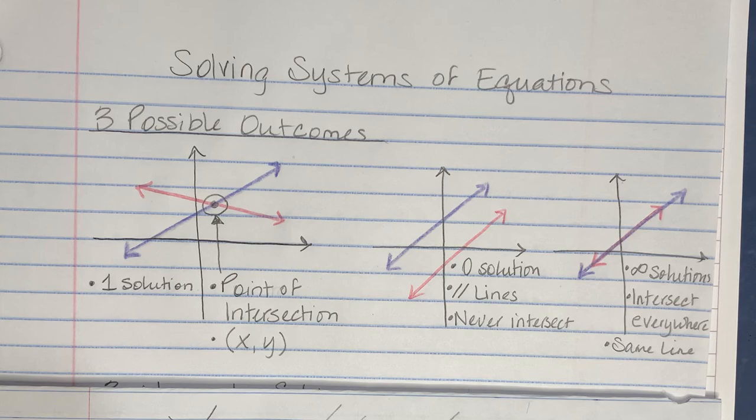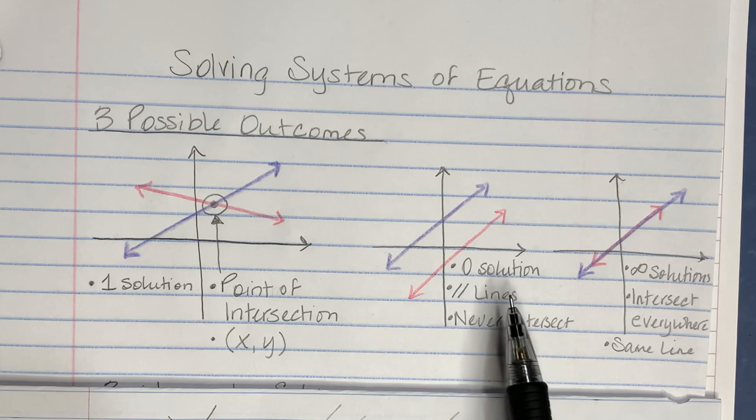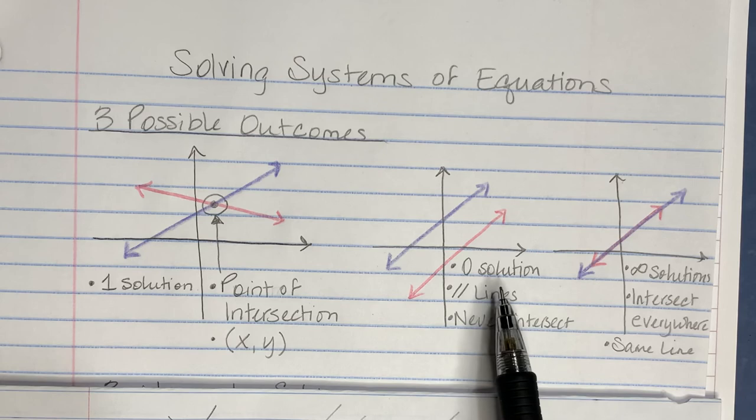If the lines happen to never cross, then the lines are parallel. If crossing implies the number of solutions, then if they never cross there are zero solutions. These are parallel lines — they never intersect, so there is no solution.